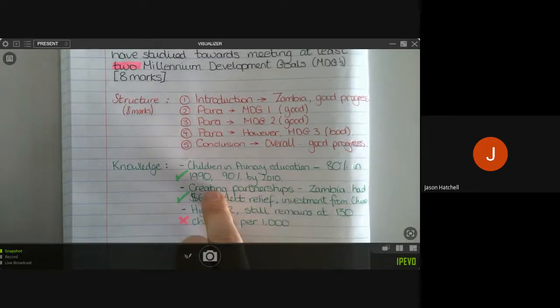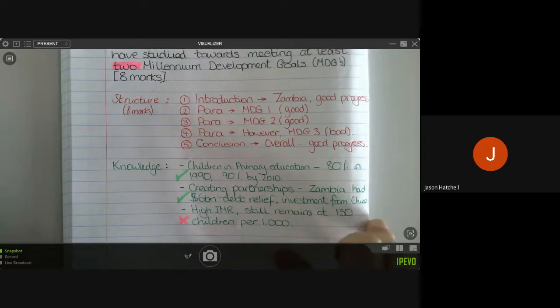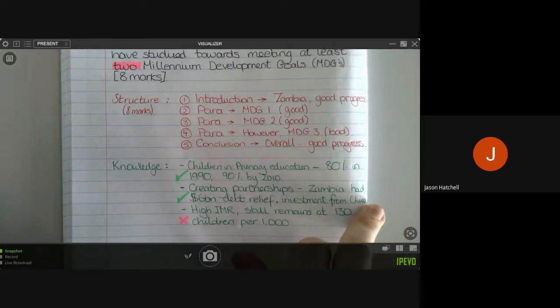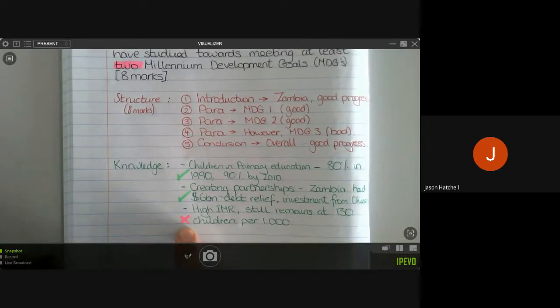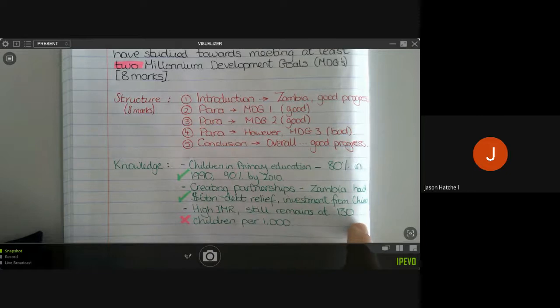And Zambia had 6 billion debt relief from other nations around the world and also has had major investment from China. So that is another positive or achievement for Zambia. And then I've also picked out my not so good Millennium Development Goal as well, which is it still has a high infant mortality rate, which is still at 130 children per 1000 children born die before the age of five.